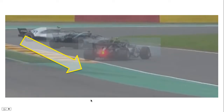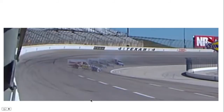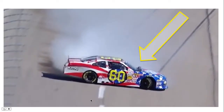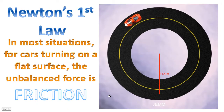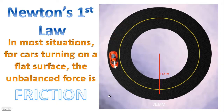Similarly, for this particular spin, once again it seems that the car is moving in a straight line, and we can see that from the skid marks. And so for the car to turn — and hence no longer move in a straight line — according to Newton's first law, it needs an unbalanced force. That unbalanced force, in most situations for cars turning on a flat surface, is friction.